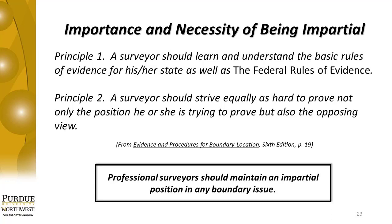As a professional land surveyor — and the key word is professional — one of your charges is for the welfare of the general public. Impartiality becomes very important. As professionals, we have to prove or disprove all evidence equally. Reading through the rest of that section gives some strong words about the surveyor not being biased. We have to make sure that we work with the evidence in a way that truly shows where the line was laid on the ground by the original surveyor, without showing any favoritism towards either landowner. Professional surveyors should maintain an impartial position in any boundary issue.